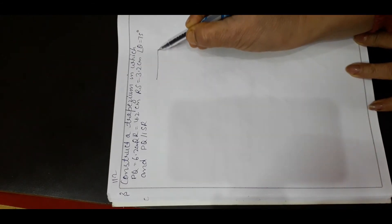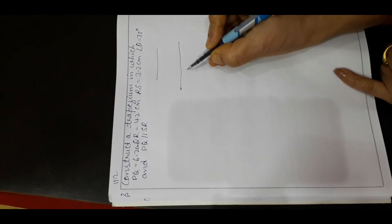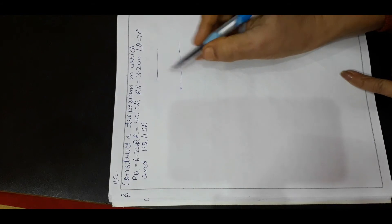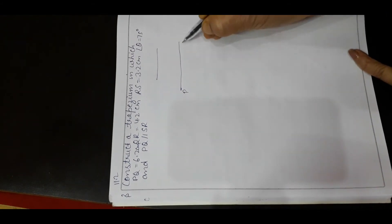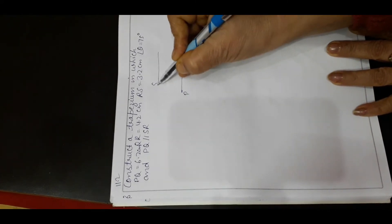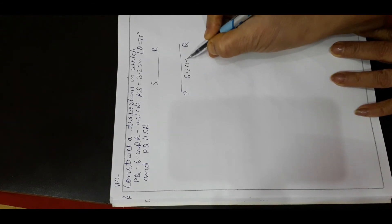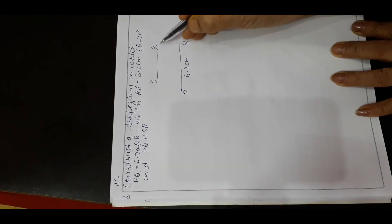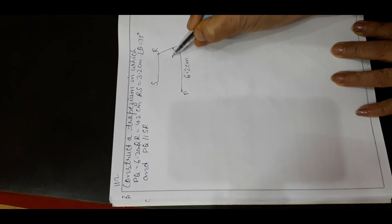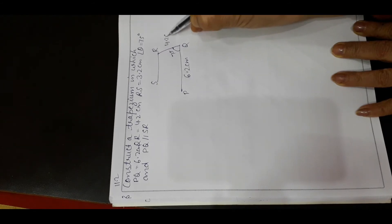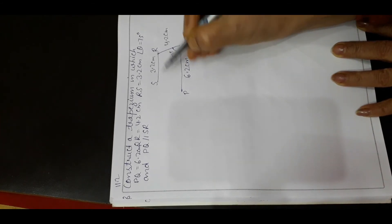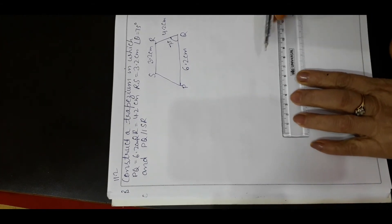We will draw a trapezium. The condition for a trapezium is that one pair of opposite sides is parallel. Here PQ and SR are parallel — that is given. PQ is 6.2 cm, QR is 4.2 cm, angle Q is 75 degrees, and RS is 3.2 cm. First, draw PQ equal to 6.2 cm.